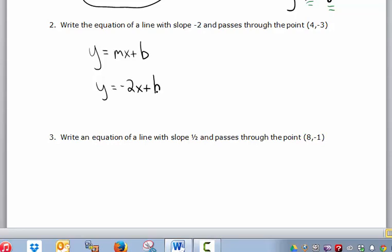And in this case, b isn't given directly, we're going to have to find it. So what do we know? We know that the line passes through that point.